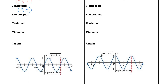Next we're going to look at our x-intercepts — where the graph crosses the x-axis. There are a lot of them, and because our graph goes on forever, there's going to be an infinite number of x-intercepts. You can see the first one is at π, then 2π, 3π, and so on. We can say our x-intercepts are at πn, where n is any integer.